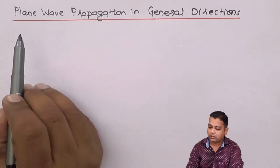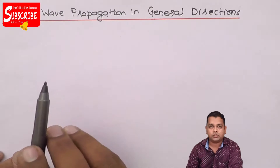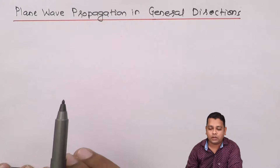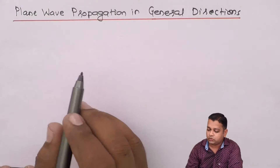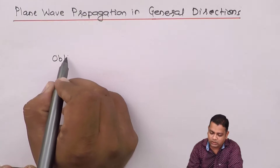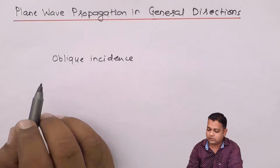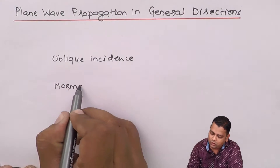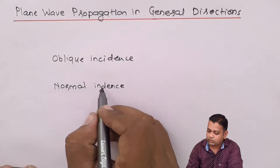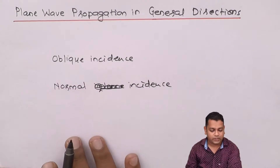The topic is Plane Wave Propagation in General Directions. The question is first of all how to mathematically model and describe the uniform plane wave propagating in any arbitrary direction. This problem is generally called not normal incidence but oblique incidence. Normal incidence, which makes a 90-degree angle or is perpendicular to the boundary surface, can be considered as a special case of oblique incidence.